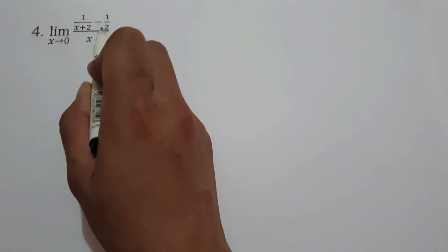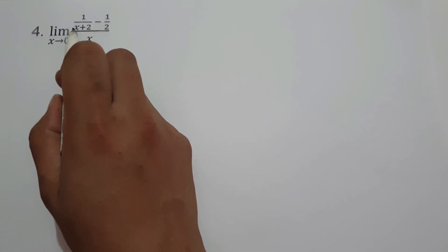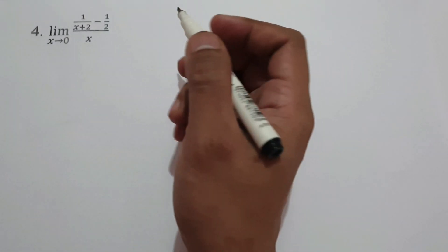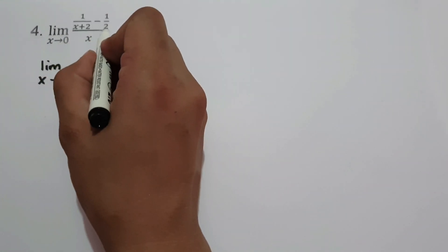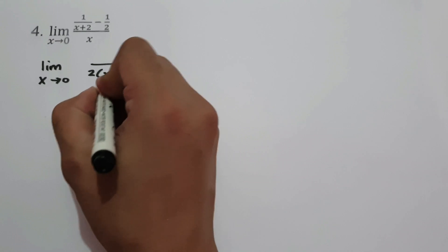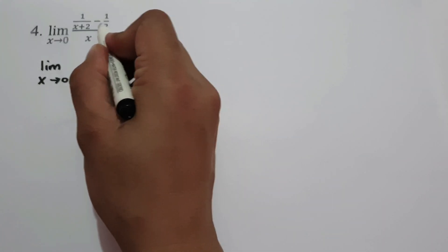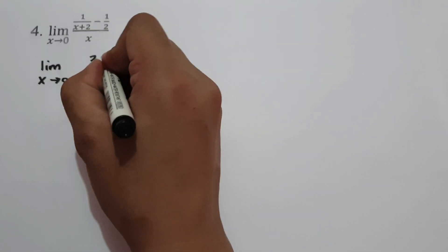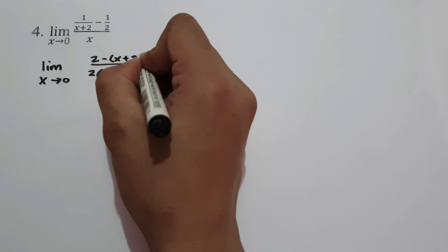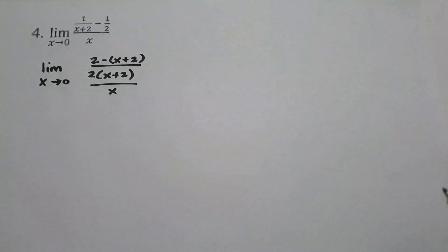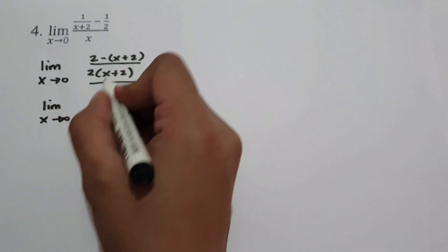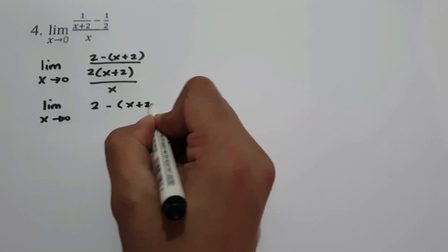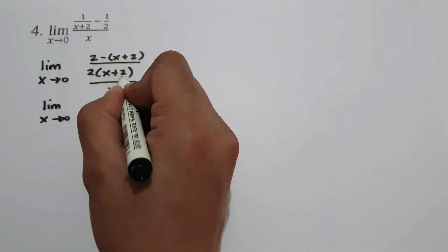On our last example, what is the limit of 1 over x plus 2 minus 1 half, all over x, as x approaches 0? If we substitute the value of x, we are going to have 0 over 0. So to simplify the given expression, let's have the limit as x approaches 0. Let us find the LCM of 2 and x plus 2, which is 2 times x plus 2. Let's multiply 2 times 1, that is 2. And then negative 1 multiplied by x plus 2, that is negative quantity of x plus 2.